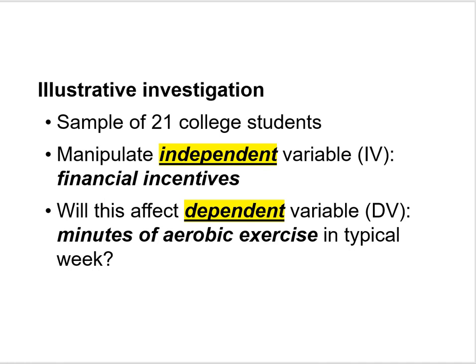Illustrative investigation — this should sound familiar to you. This is the same illustrative investigation I've used to illustrate other parts of one-way analysis of variance. Imagine you're conducting an investigation in the general area of health psychology. You have a sample of 21 college students that will be assigned to three different treatment conditions. You're going to manipulate an independent variable — financial incentives — and your question is: will this have an effect on the dependent variable, which is minutes of aerobic exercise in a typical week?